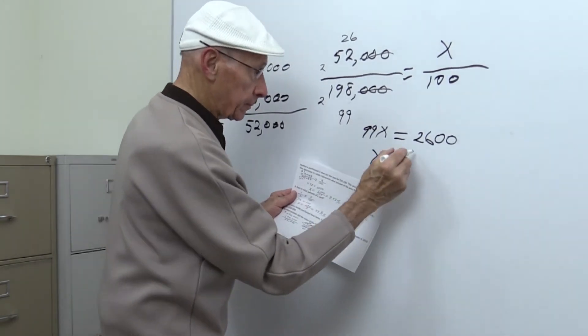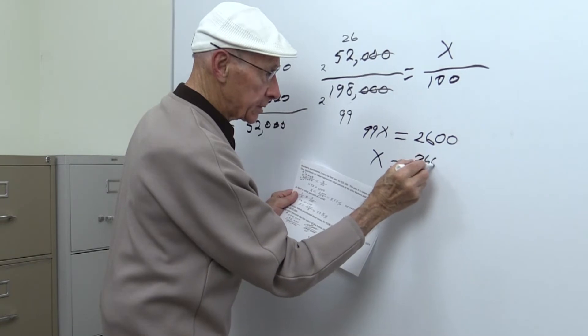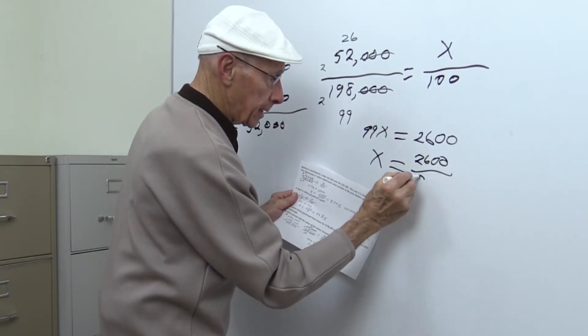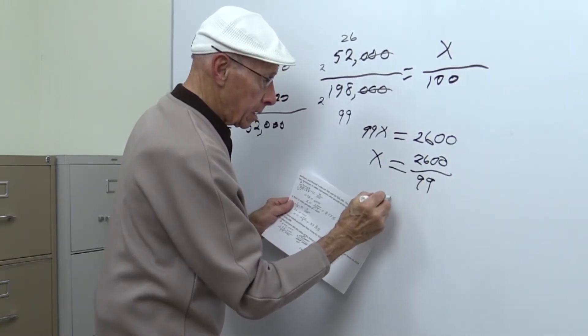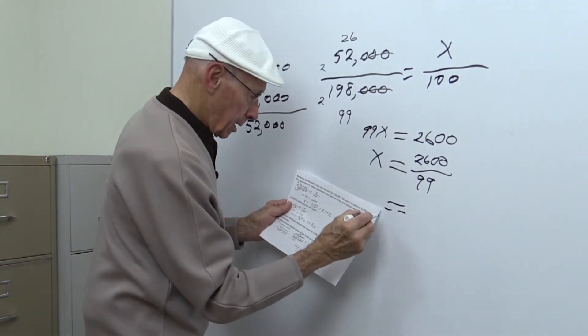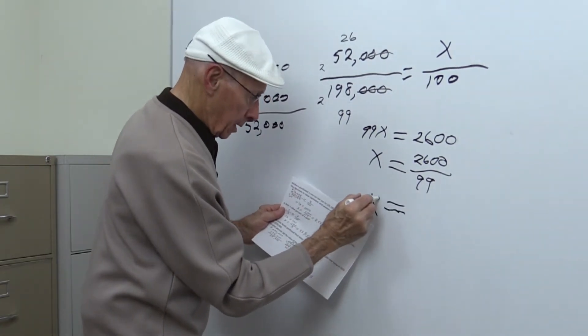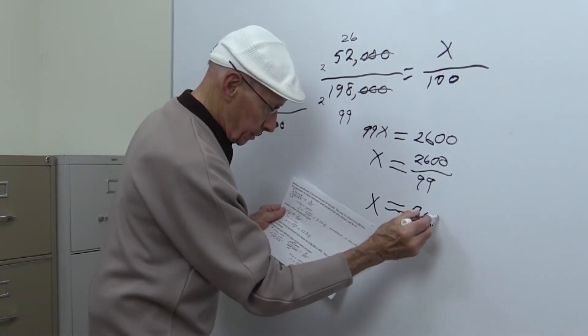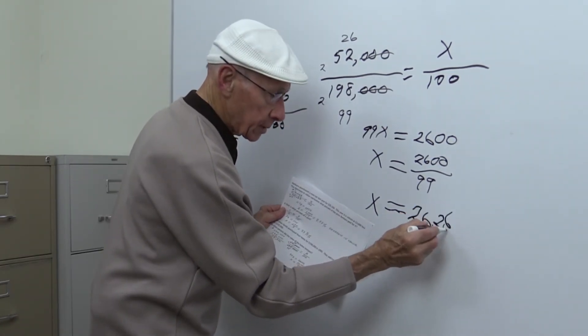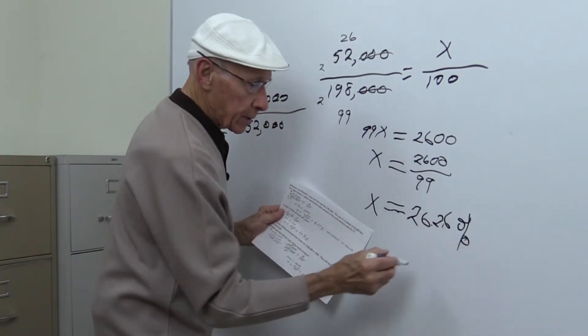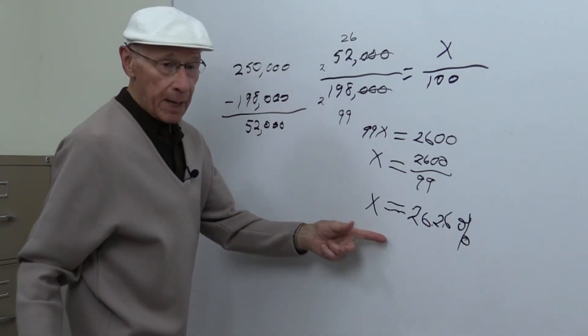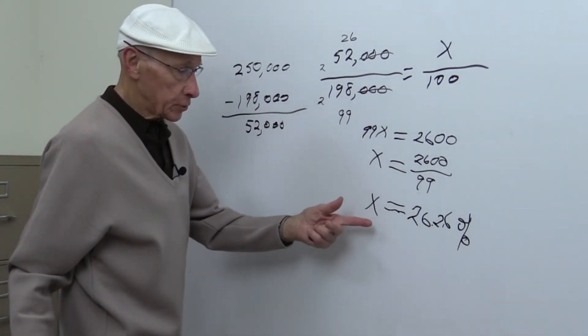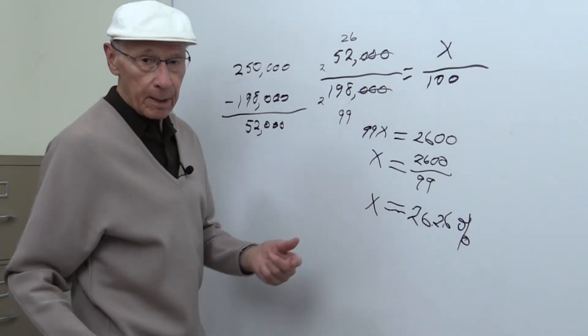Solving for x, we have 26 over 99. And x is equal to 26.26%. Not bad in those number of years, assuming the home didn't have any upgrades at all.